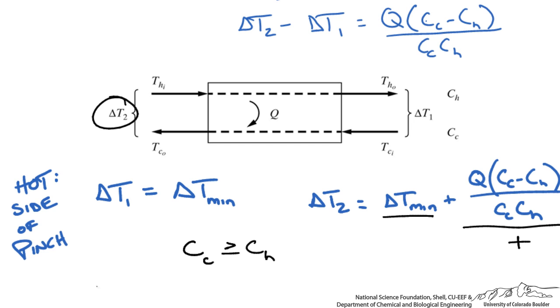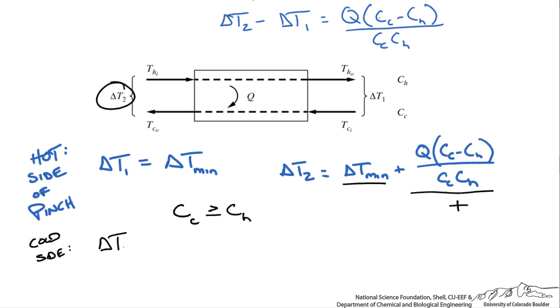If we are looking at the cold side, we set delta T2 equal to delta Tmin and rework this equation. This time there is going to be a negative sign. For this to be true and make sure that our delta T1 is greater than delta Tmin, our CH has to be greater than or equal to our CC.